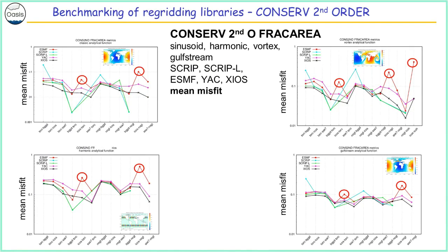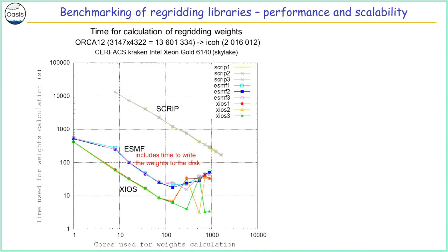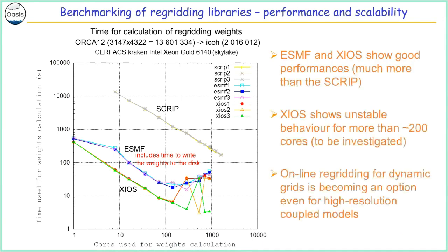There was another specific problem with ESMF. Regarding the performance of the libraries, these are the scaling curves to calculate weights for some high-resolution grids. We see that SCRIP scales but very badly. ESMF and XIOS are much better. XIOS shows some instabilities at more than 100 processes. ESMF seems slower, but this number includes the time to write the weights to disk. The conclusion is that ESMF and XIOS are much more performant than SCRIP.